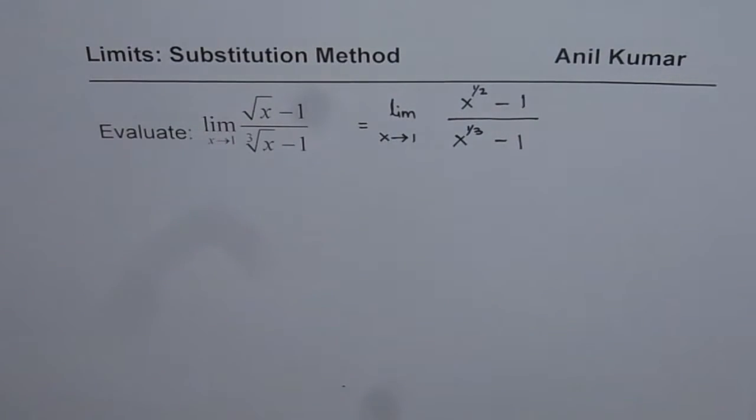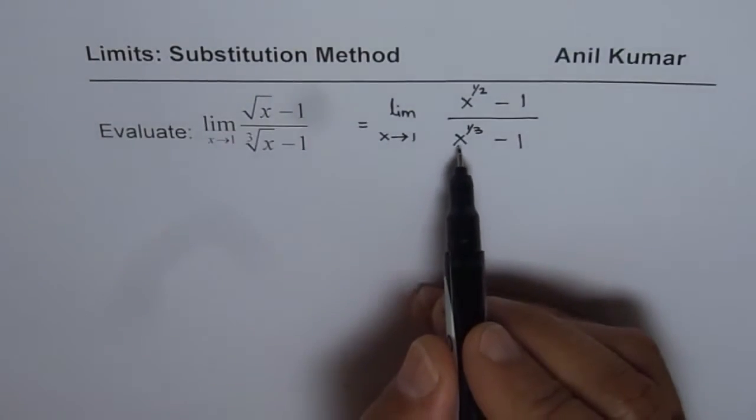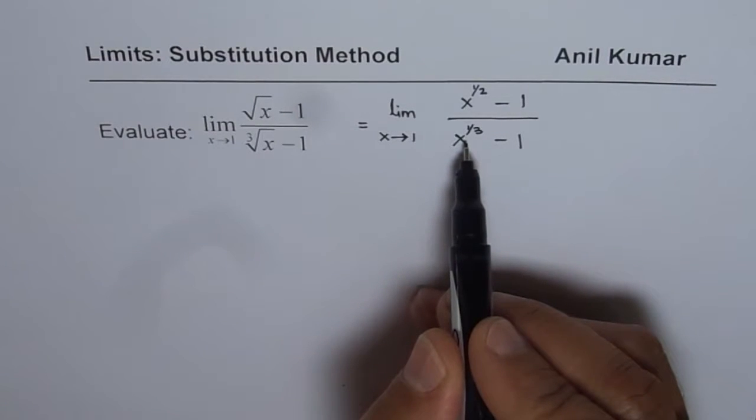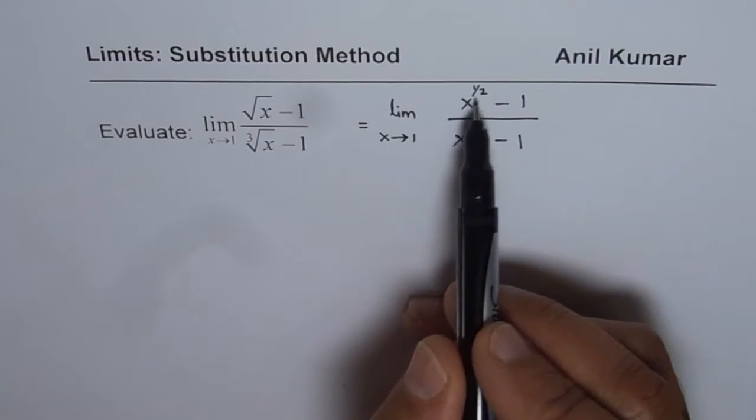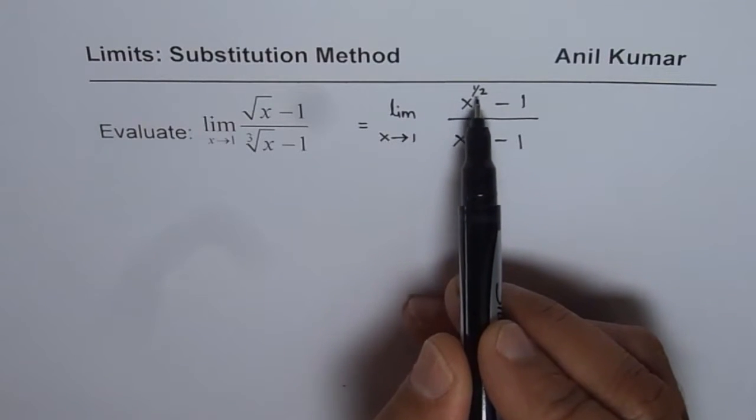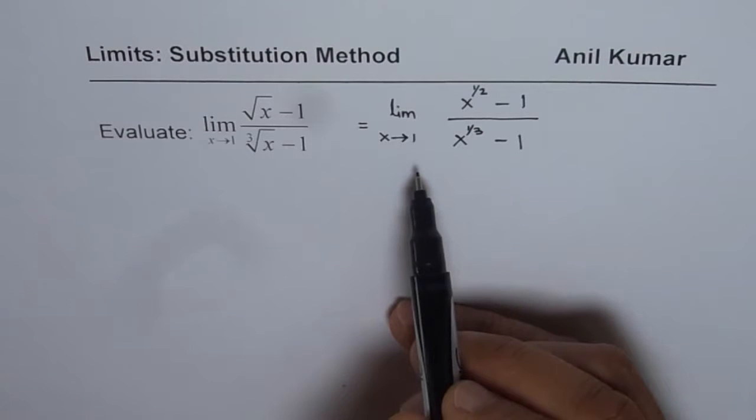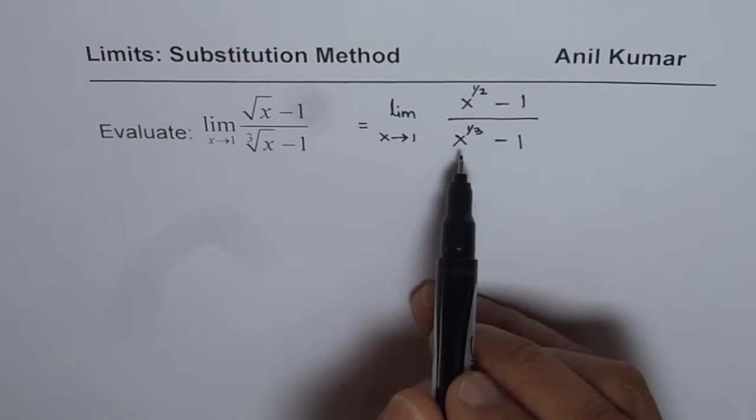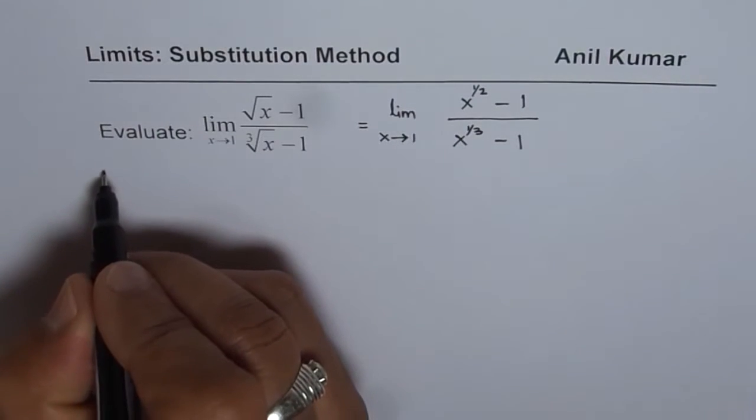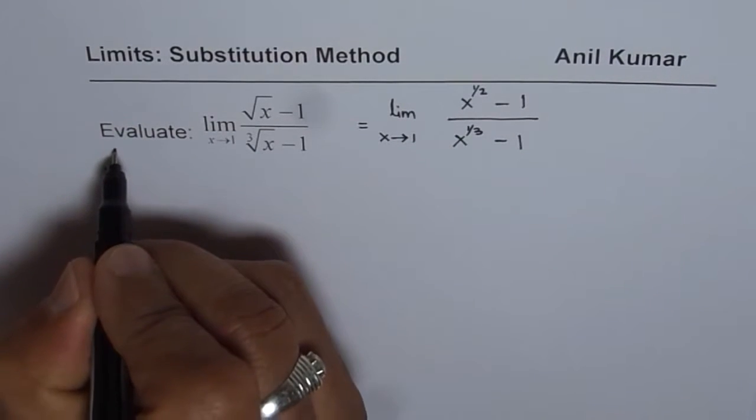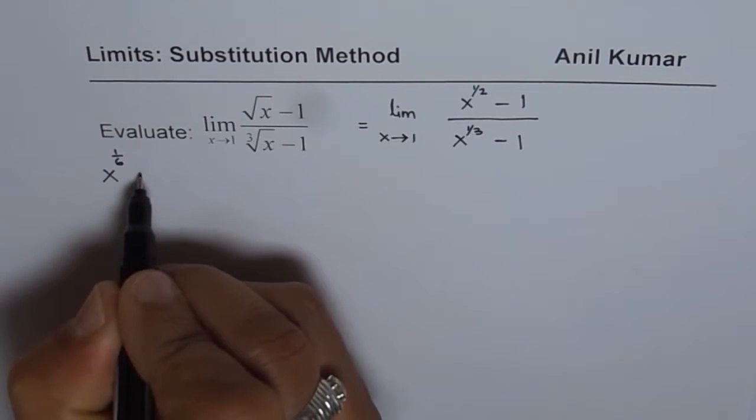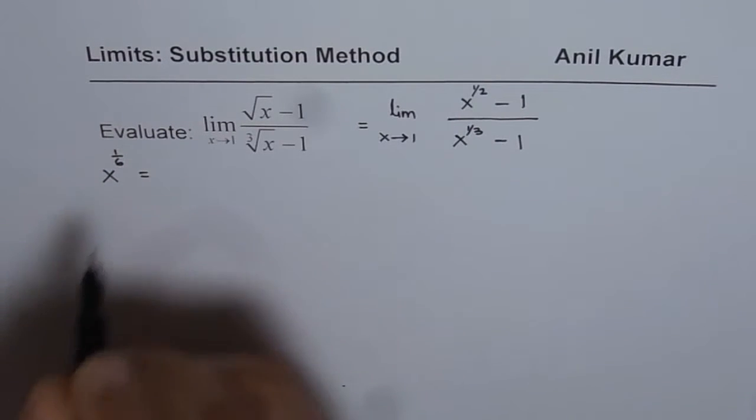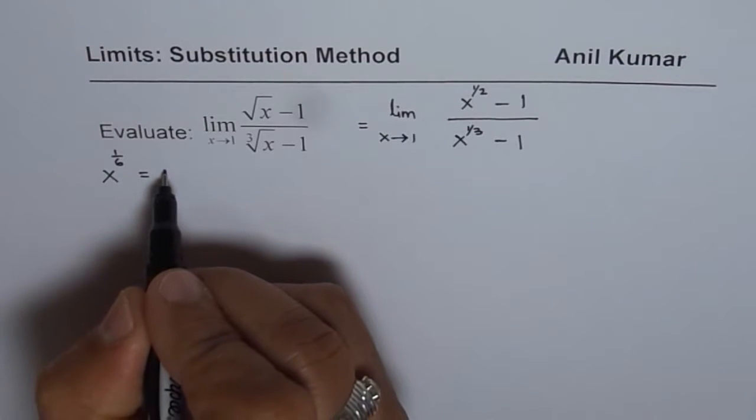Now if I substitute cube root of x as a variable, then this will not be a whole number in the exponent for the numerator. And that is the reason why in this particular case, we substitute sixth root of x as a variable. Let's say this variable is p.